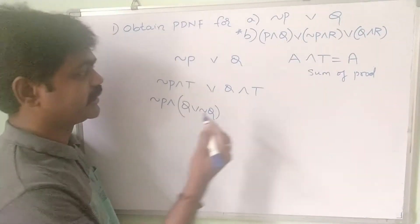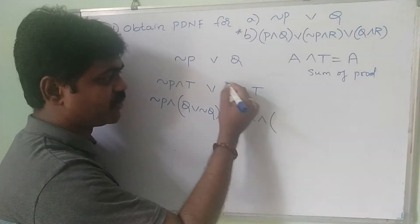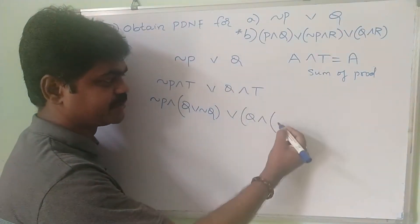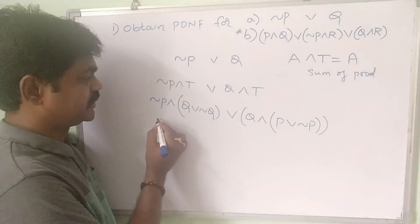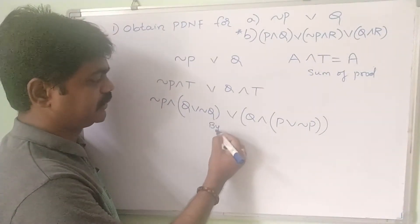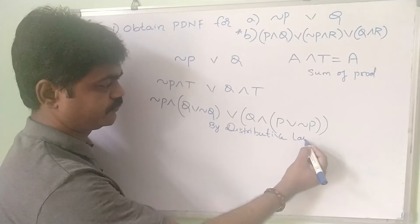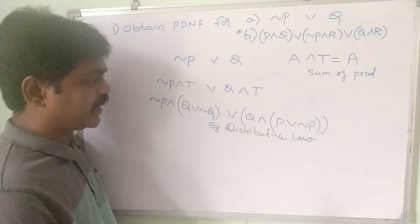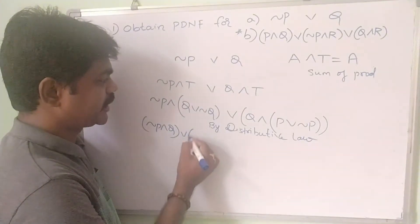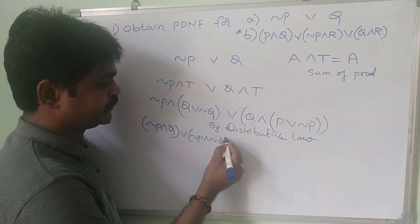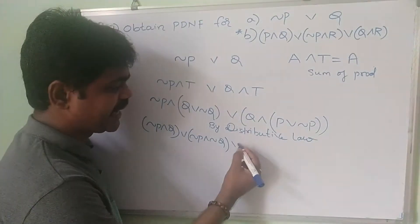So in the place of true, I write q OR negation q. For q, p is missing, so I write p OR negation p in the place of true. Now applying the distributive law: negation p AND (q OR negation q) gives negation p AND q OR negation p AND negation q by the distributive law.